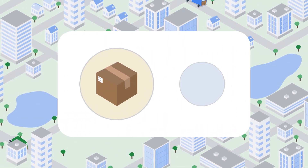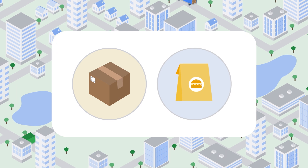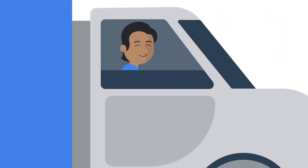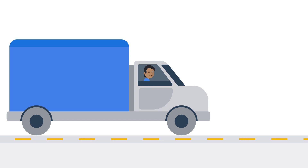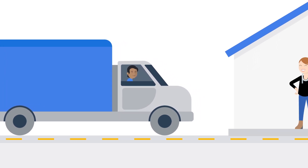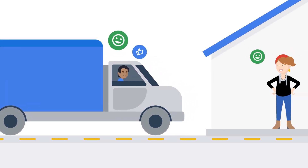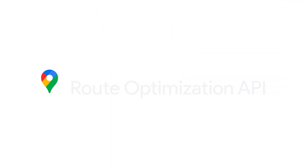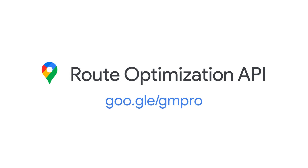From logistics to on-demand delivery to field services and more, from small businesses to large enterprises, the Route Optimization API transforms how we move goods and personnel — making trips and deliveries faster, greener, and more cost-effective. Try the Route Optimization API today to start improving your fleet efficiency and accomplishing your goals.